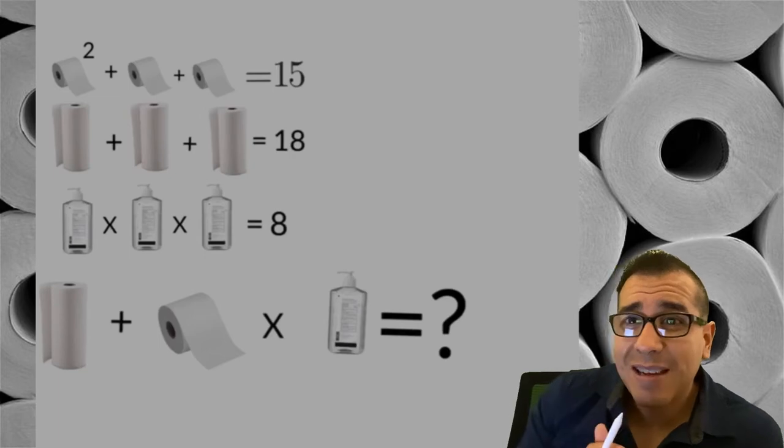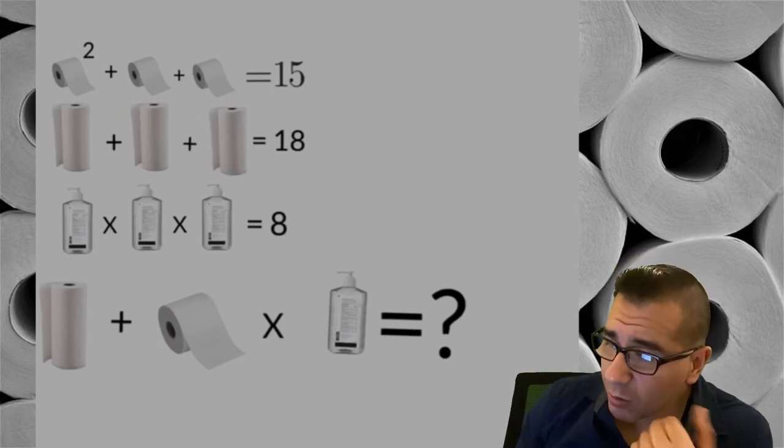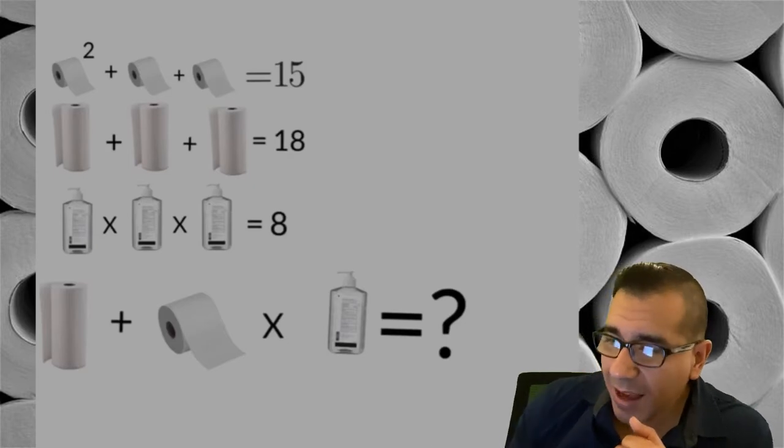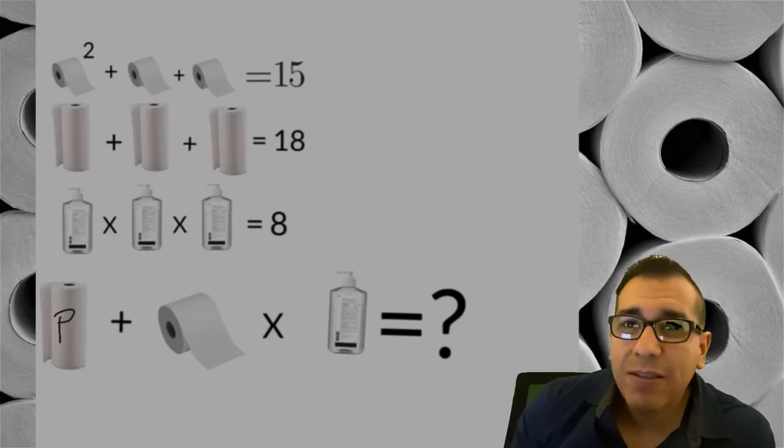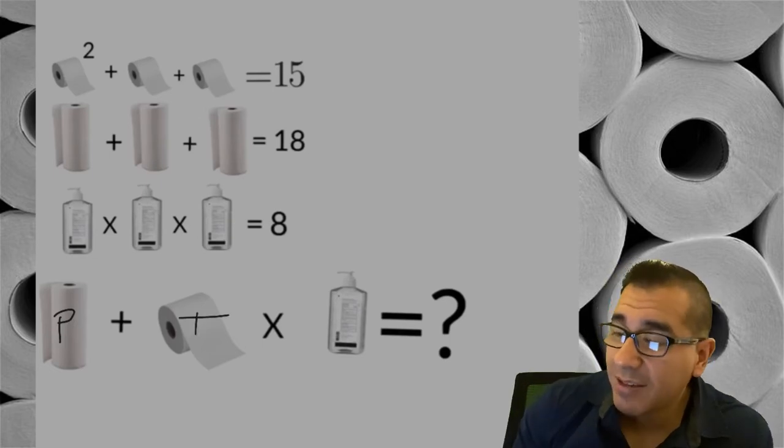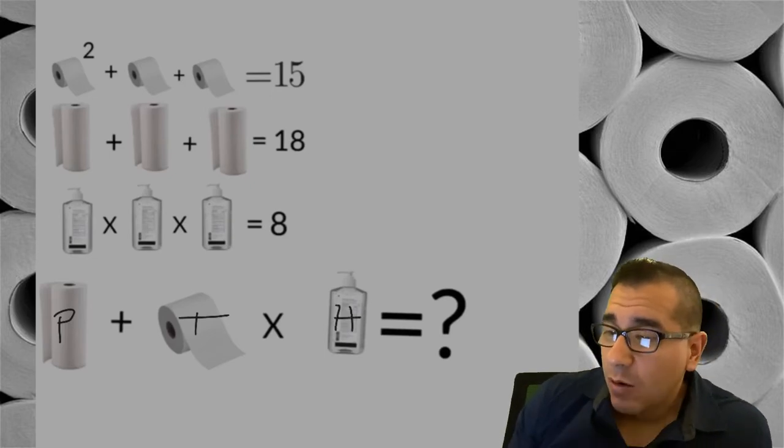Alright, so let's get into business here. What I'm going to do when I start to solve this is I'm not that good at drawing, so I'm going to say every time I see a paper towel I'm gonna call that P, every time I see a toilet paper roll I'll call that T, and every time I see a hand sanitizer bottle I'll call that H.